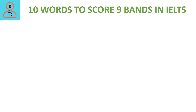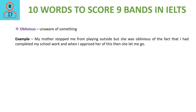The next word is oblivious. It means to be not aware of something or to not have knowledge of something. In the example, the mother was not aware that her son had completed his homework, which is why she stopped him from going outside.